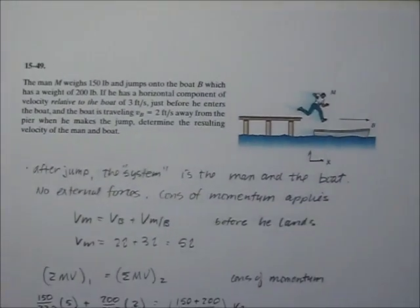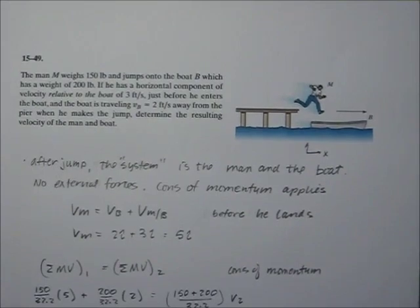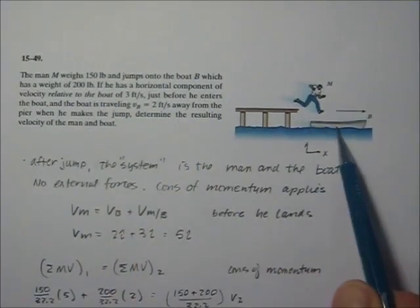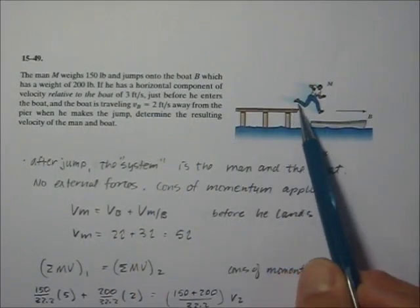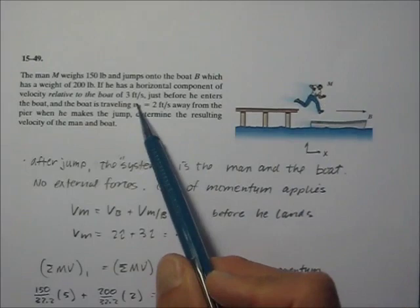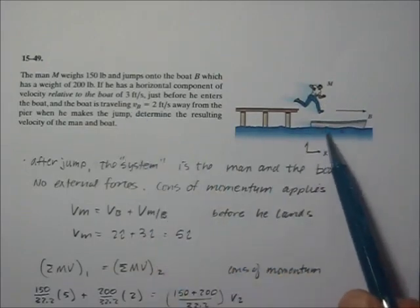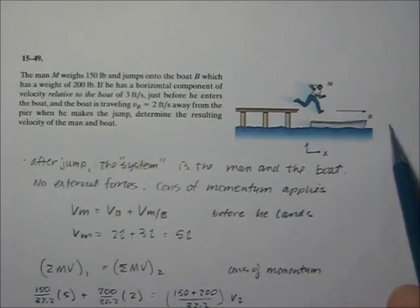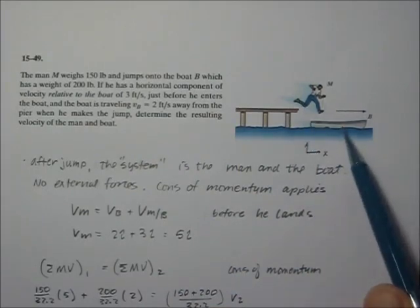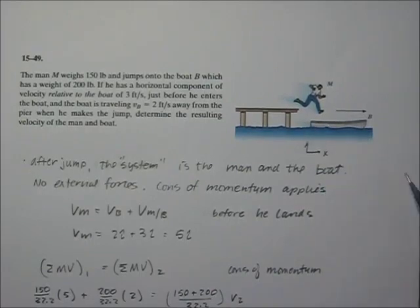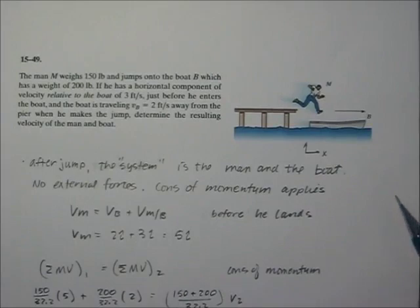Here's an example of a guy jumping onto a boat. He weighs 150 pounds, the boat weighs 200 pounds. He's going to jump with a speed relative to the boat of three feet per second. The boat, at the time, is traveling two feet per second. He's jumping onto the boat, and we want to find the speeds of the boat and the man after they join together — after he lands in the boat.